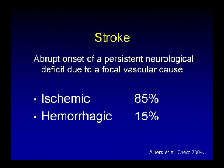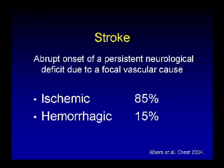Stroke is an abrupt onset of a persistent neurological deficit due to a focal vascular cause. That definition does not separate ischemic and hemorrhagic — both are included. The term 'apoplectic' has been historically used to mean an abrupt onset of a neurological deficit. Far and away, ischemic is much more common at 85%, with hemorrhagic being only 15%.